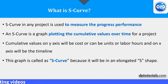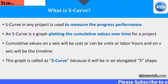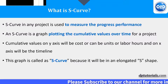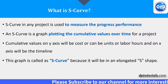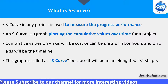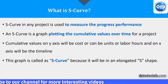The S-curve is a tool to measure progress performance. An S-curve is a line graph plotting cumulative values against the timeline. Cumulative values on the Y-axis can be either cost, units, or man hours, and the X-axis will always be the timeline.